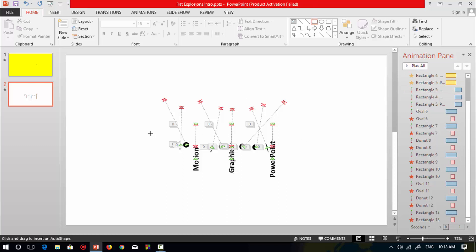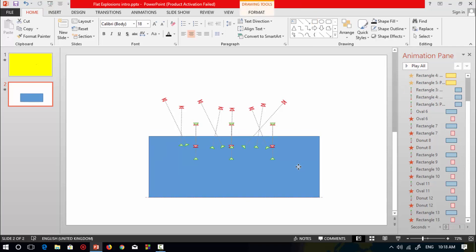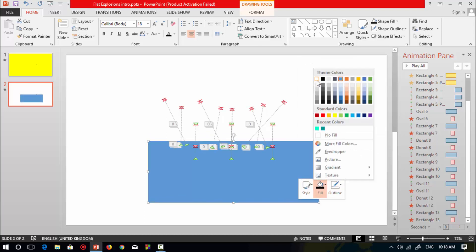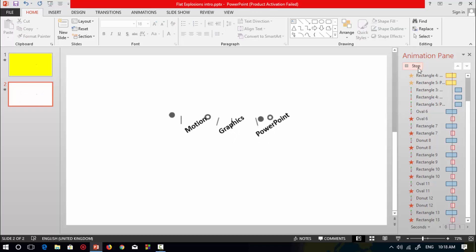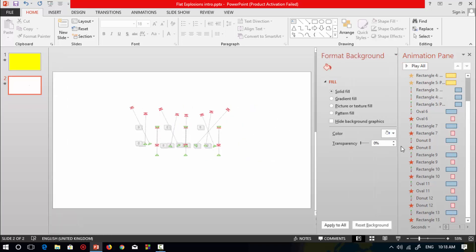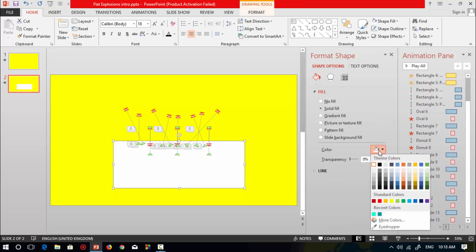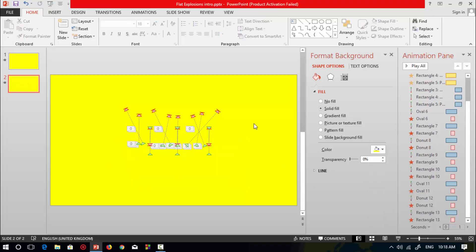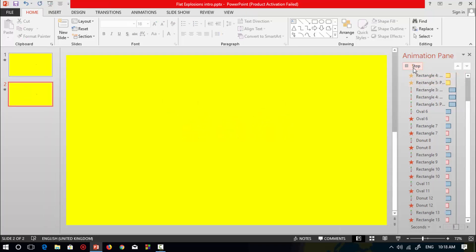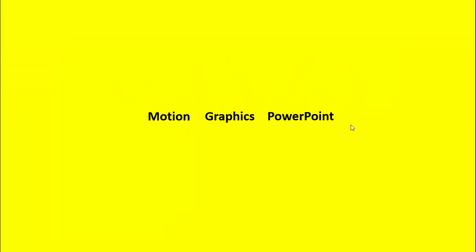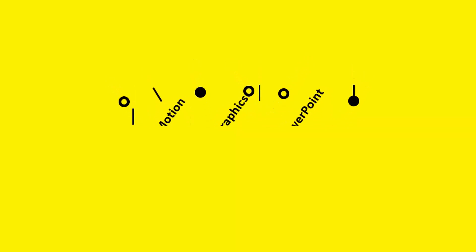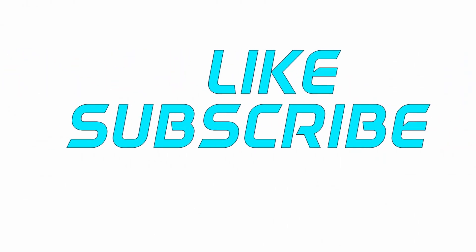I'll select a rectangle shape to cover the text, change it to no outline, and fill it white so the flat explosion intro is ready. You can change the background color — I'll change it to yellow, and change the shape color covering the text box to yellow as well. Check all these animations. Hope you like this animation — share your ideas in the comment box. To watch more videos from this channel on PowerPoint, subscribe.